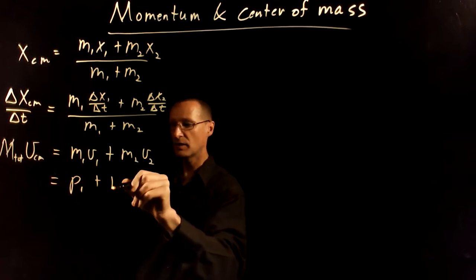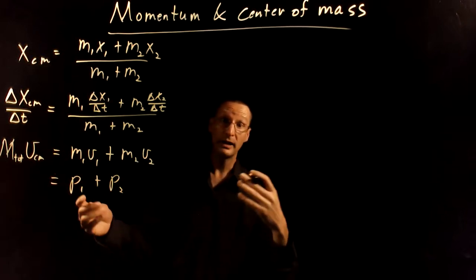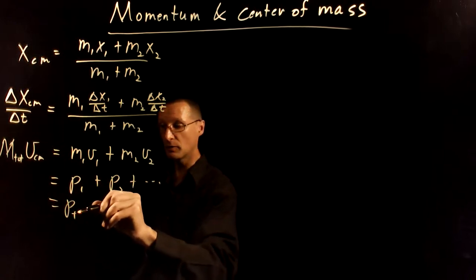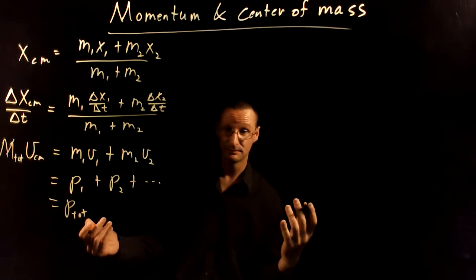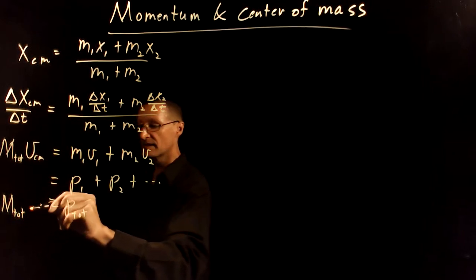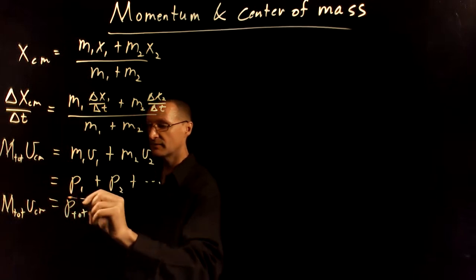So this is the momentum of particle 1, the momentum of particle 2. If we had more particles, then we would just add those up too. Well this is just the total momentum of the system, and that's just the total mass times the velocity of the center of mass.